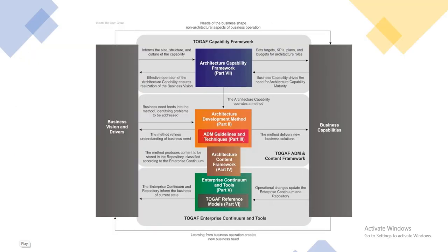The TOGAF capability frameworks and architecture capability frameworks — part four — and the application development methodology, ADM guidelines and techniques, which we apply here. There are two verticals: business visions and drivers, and business capability. The first TOGAF capability framework captures information and structure, capability targets, KBA base, and then returns to business capability and efficiency.